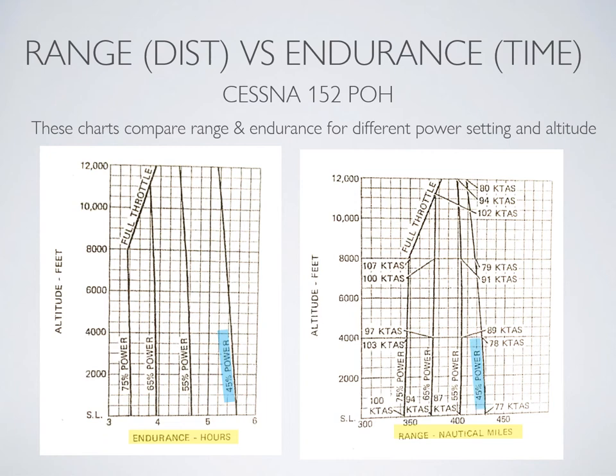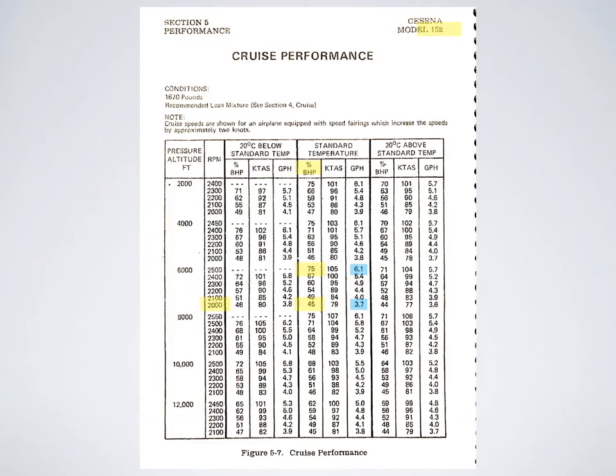What does 45% power mean? Flip over to the cruise performance chart, which gives cruise performance for a Cessna 152 at different pressure altitudes and different temperatures. As an example, take a flight at 6,000 feet in standard temperature — that's the middle column. An RPM setting of 2,000 RPM gives a brake horsepower of 45%, a true airspeed of 79 knots, and a fuel burn of 3.7 gallons per hour. Increasing power to 2,500 RPM gives 75% brake horsepower, a true airspeed of 105 knots, and a fuel burn of 6.1 gallons per hour.